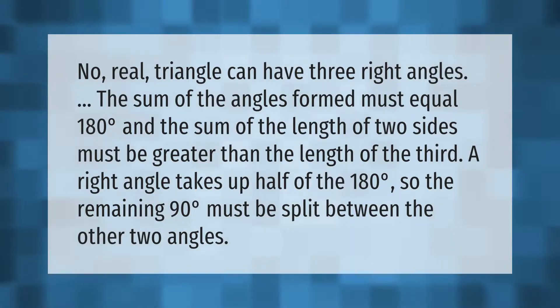No real triangle can have three right angles. The sum of the angles formed must equal 180° and the sum of the length of two sides must be greater than the length of the third. A right angle takes up half of the 180°, so the remaining 90° must be split between the other two angles.